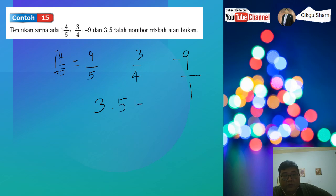3.5, kalau saya tukar daripada perpuluhan, okay kita alis 1 titik perpuluhan, dia jadi 35 per 10. So adakah ini juga adalah nombor nisbah?